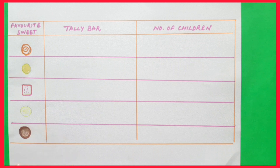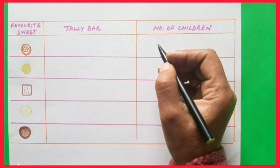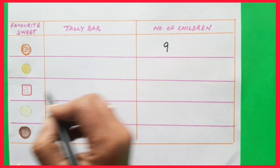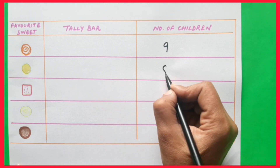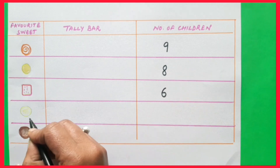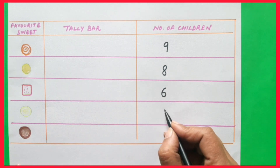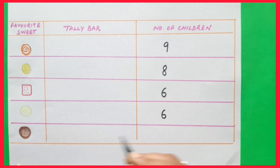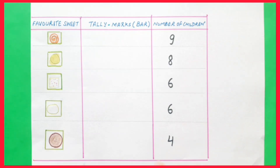Children, we will write this collected information in the form of a table. Children liking jalebi are nine, laddu are eight, barfi are six, rasgulla are six, and gulab jamun are four. Now we will write this information in the form of tally marks. Children, you have already learned tally marks in your previous classes. The collected information is written in groups of five.